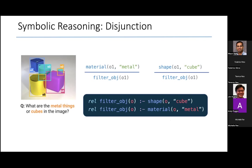Now let's look at disjunction. What if the question was slightly changed to say, not that I want all metal cubes, but what if I wanted things that are either metallic or that are cubes? In this case, I simply write two different rules with the same head.